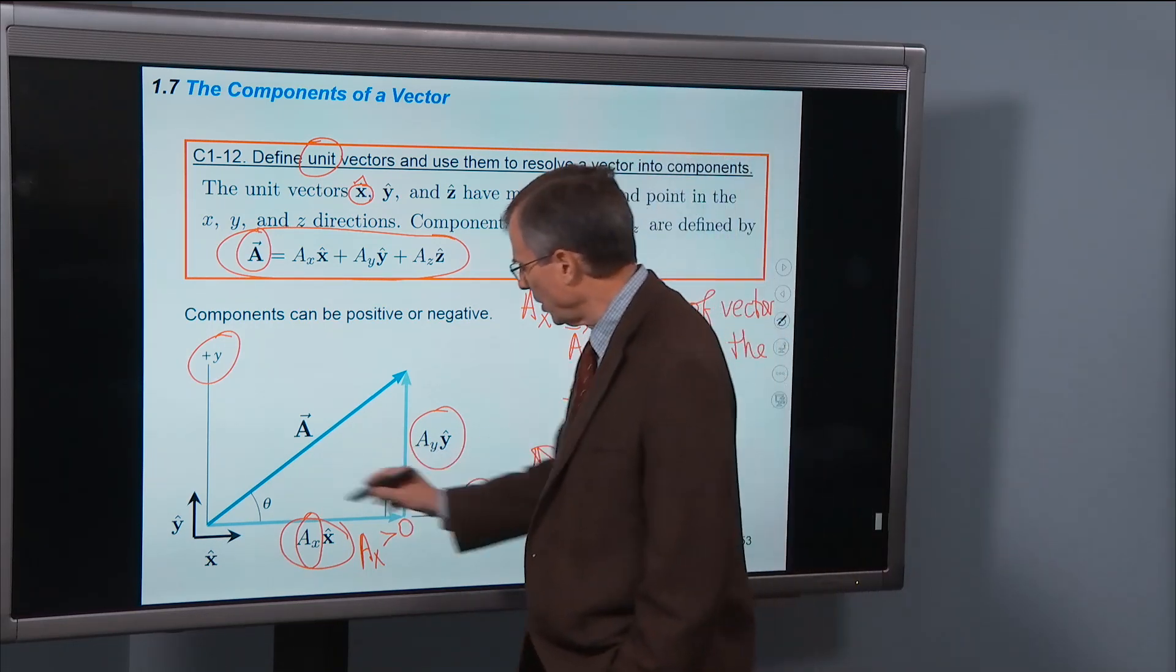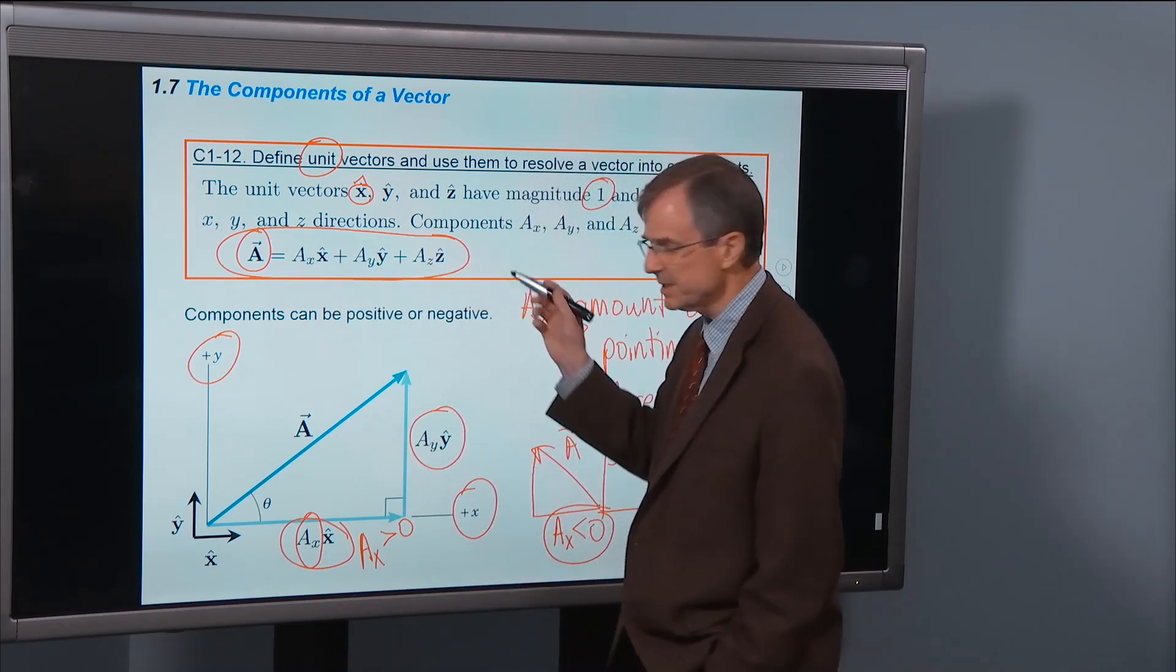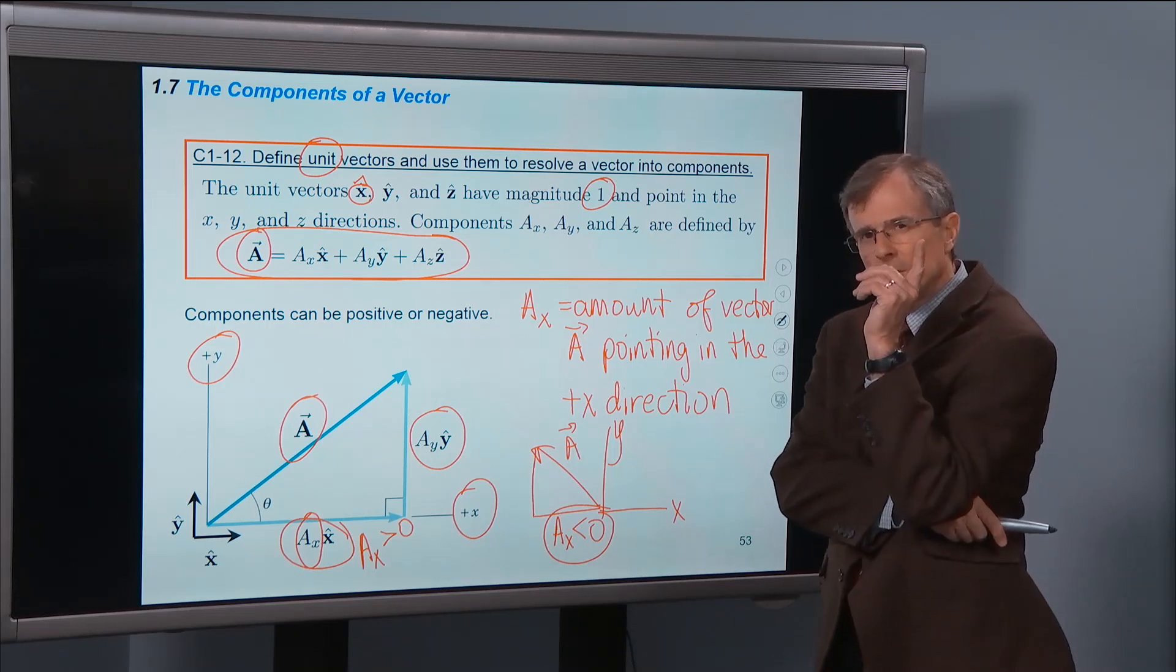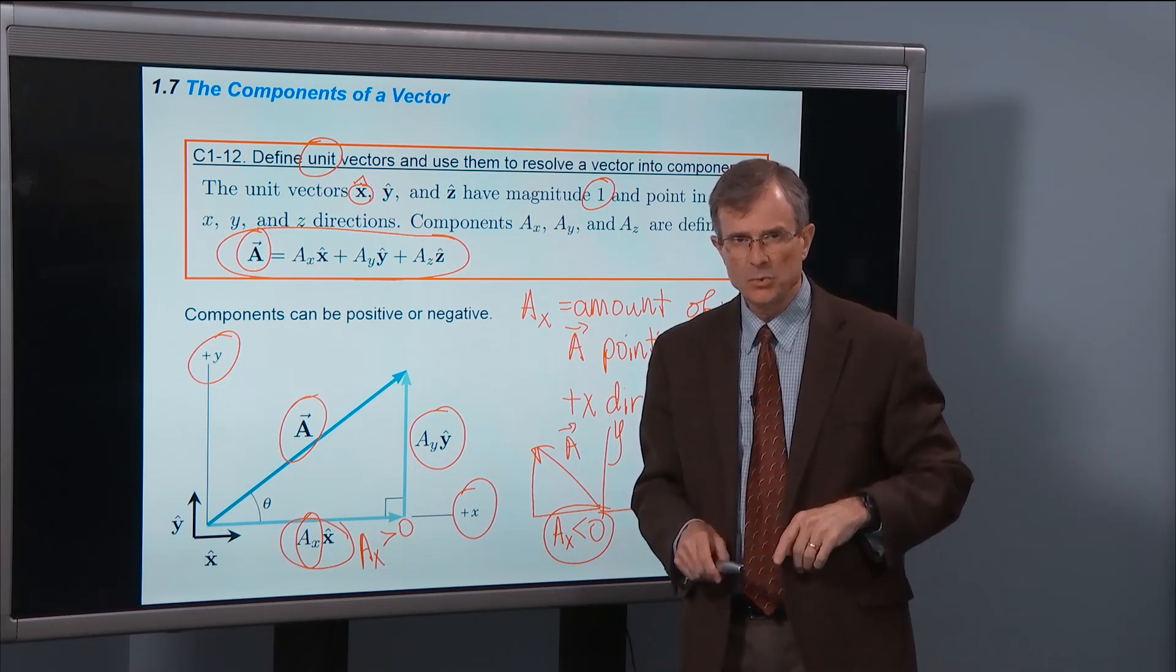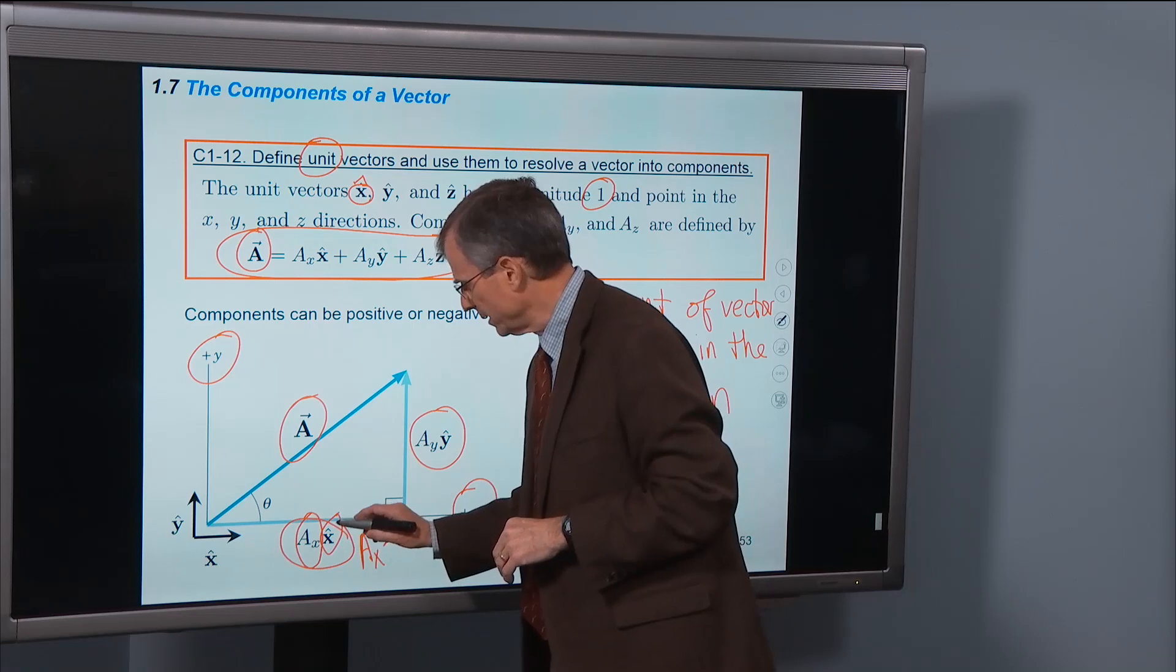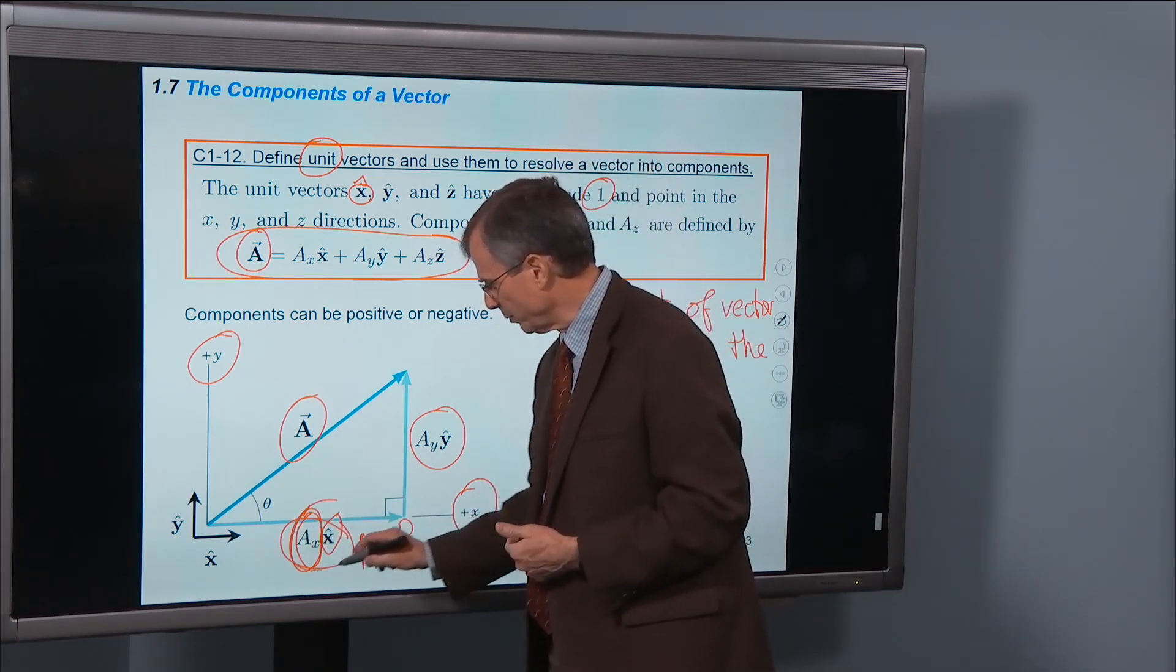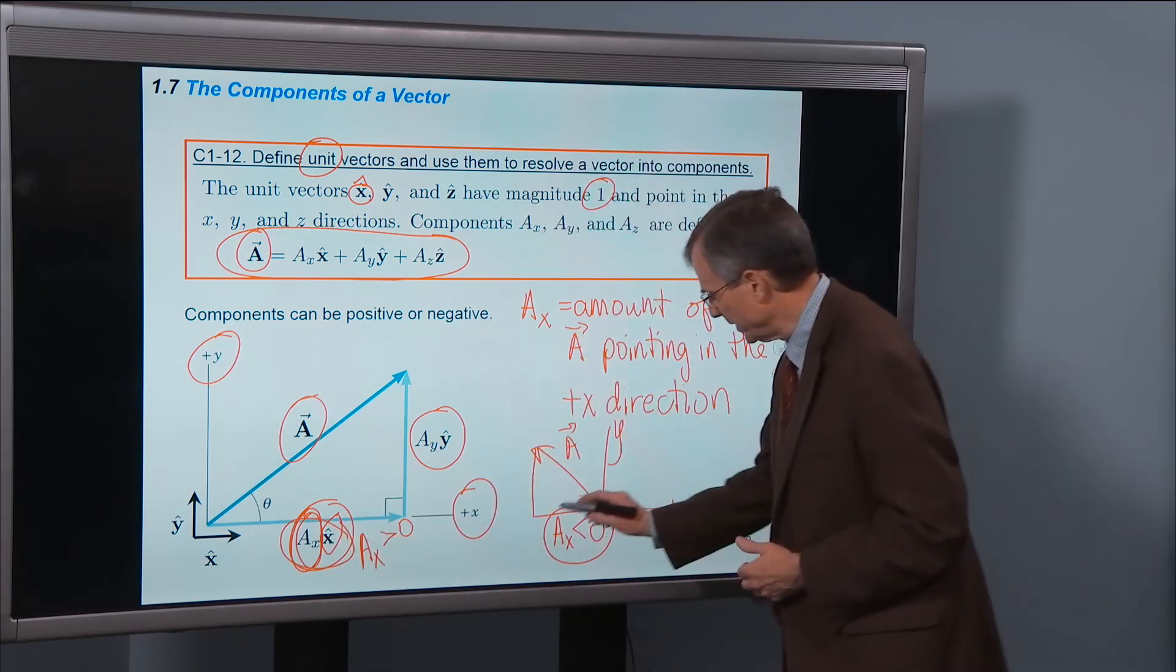And if we add all of these three vectors, well, Ax x-hat plus Ay y-hat plus Az z-hat, then we get the vector A back again. So an important point here is that this is nothing new. We know how to multiply a vector, this x-hat, by a scalar. How do we do it? If the scalar is positive, the resultant vector points in the same direction. If it's negative, it points in the opposite direction. That's where we get this case here.